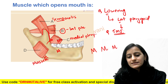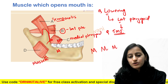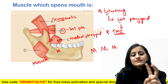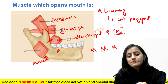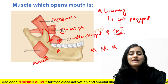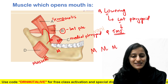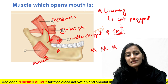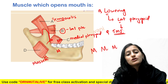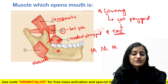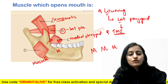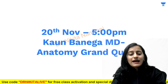So muscle C is medial pterygoid. So we have temporalis, lateral pterygoid, medial pterygoid, and masseter — the muscles of mastication. I hope this trick helps you remember: lowers the mandible is lateral pterygoid, and it has a temporomandibular joint insertion close to that.